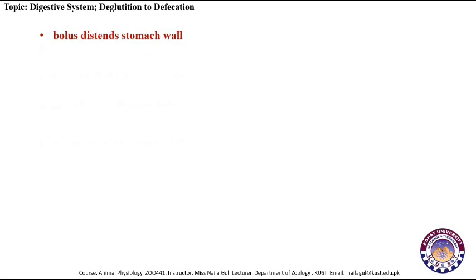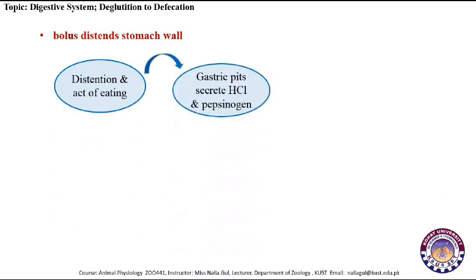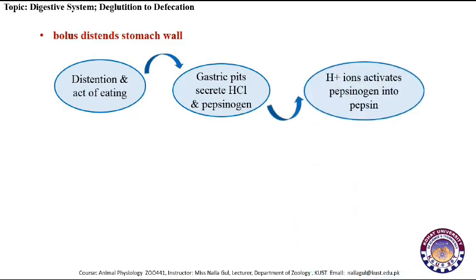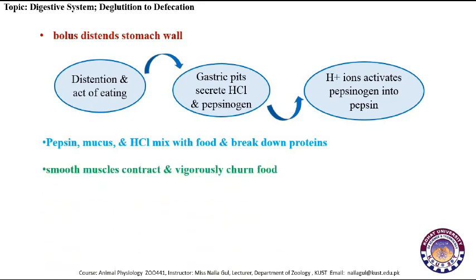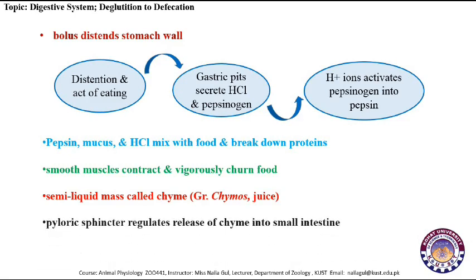When the bolus enters the stomach, it distends the stomach wall. Distension as well as the act of eating causes the gastric pits to secrete hydrochloric acid and pepsinogen. Hydrochloric acid activates pepsinogen into an active enzyme called pepsin. Pepsin, mucus and hydrochloric acid mix with the food and begin to break down proteins. Smooth muscles also start contraction and vigorously churn and mix the food. About 3 to 4 hours after a meal, the stomach contents form a semi-liquid mass called chyme, which is released into the small intestine by the pyloric sphincter.